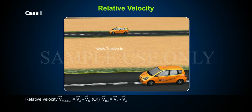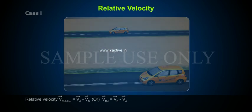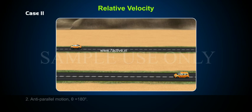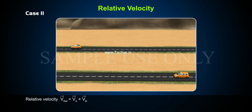Case 1: V relative is equal to VB bar minus VA bar. Case 2: Antiparallel motion, theta is equal to 180 degrees. Relative velocity V relative is equal to VA bar plus VB bar.